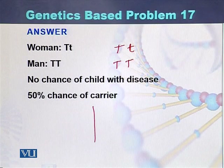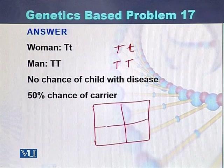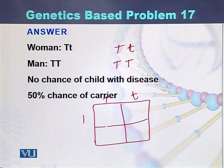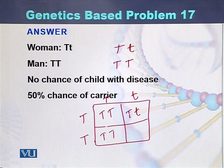If we draw the Punnett square, we can answer this question. For the woman she has one capital T and one small t — one dominant allele and one recessive allele. The father is homozygous dominant, so his alleles are capital T and capital T. Drawing the Punnett square gives us: Tt, TT, Tt, and Tt combinations.